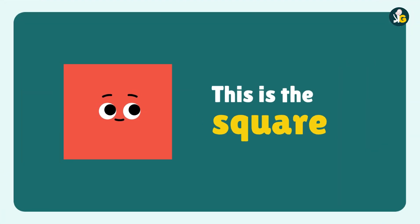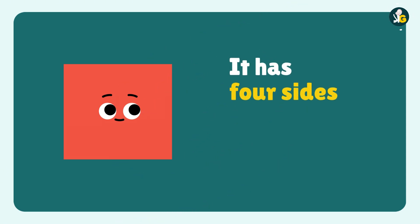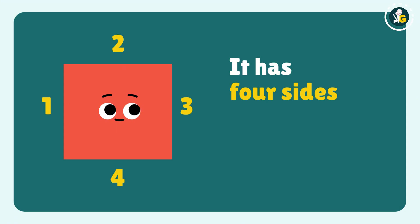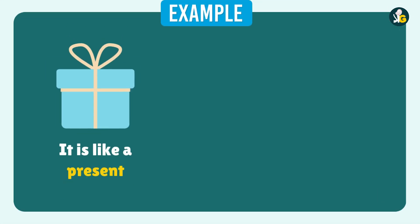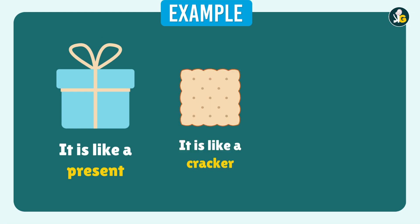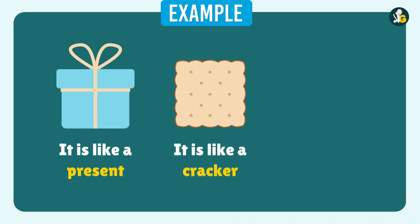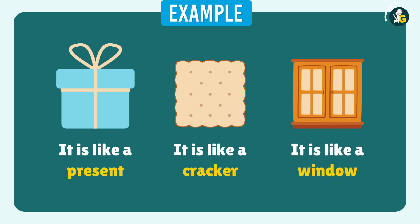This is Square. A square has four sides: one, two, three, four — they are all the same. For example, it is like a present, it is like a cracker, and it is like a window. They all have square shapes.